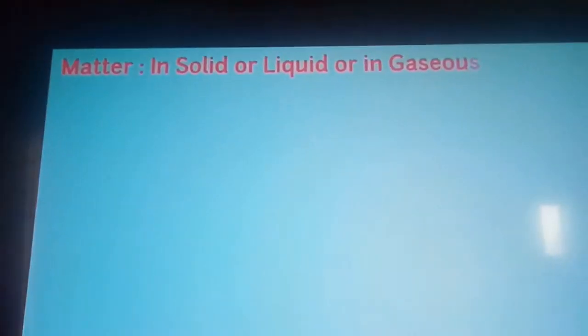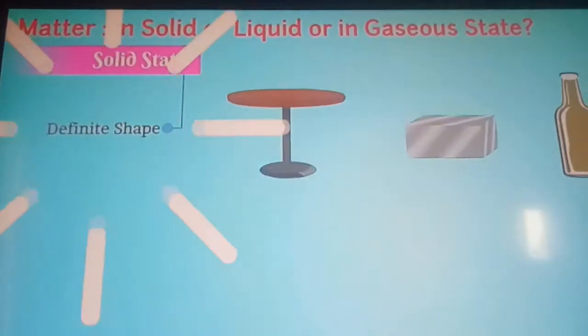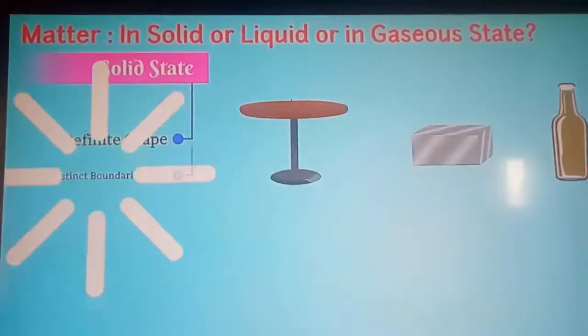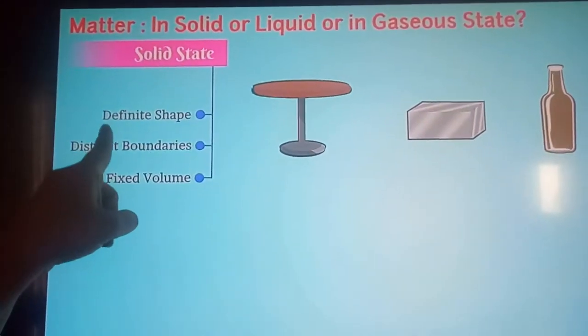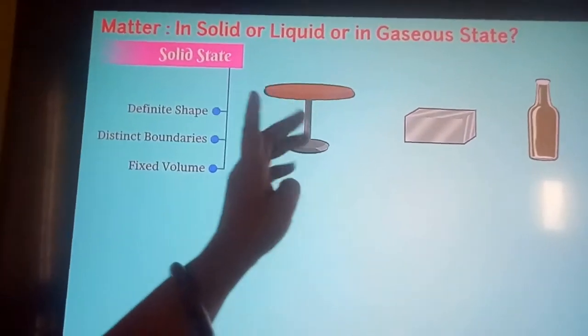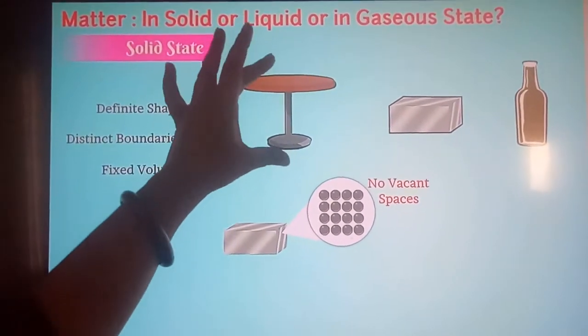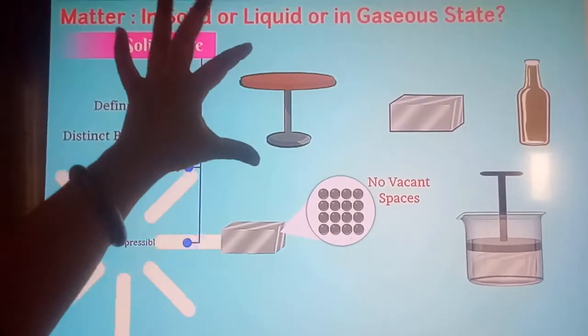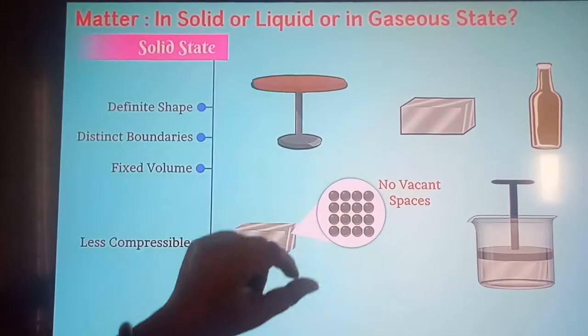Today we are going to learn about the properties of solid, liquid, and gaseous states. In a solid state, the first property is that all solid matter has a definite shape and a distinct boundary. Their shape and size are definite, and the boundaries are also fixed.